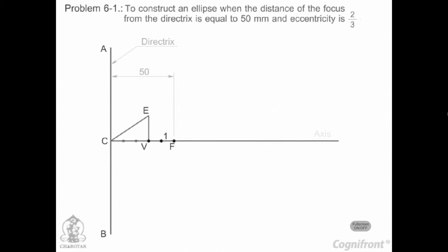Mark any point 1 on the axis and through it draw a perpendicular to meet CE produced at 1 dash. With center F and radius equal to 1 1 dash, draw arcs to intersect the perpendicular through 1 at points P1 and P dash 1. These are the points on the ellipse because the distance of P1 from AB is equal to C1. P1F equals 1 1 dash and 1 1 dash upon C1 equals VF upon VC equals 2 by 3.